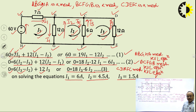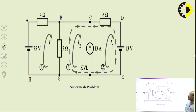Next we see what is super mesh. Super mesh occurs when a current source is connected in the common branch of two different meshes — that situation is called a super mesh.